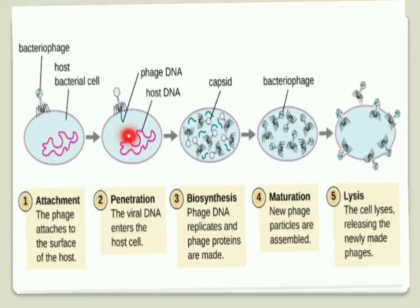This is how a virus infects or affects a bacterial cell. It destroys the host DNA, replicates its own DNA, forms the protein coat, assembles, and new viruses are formed.